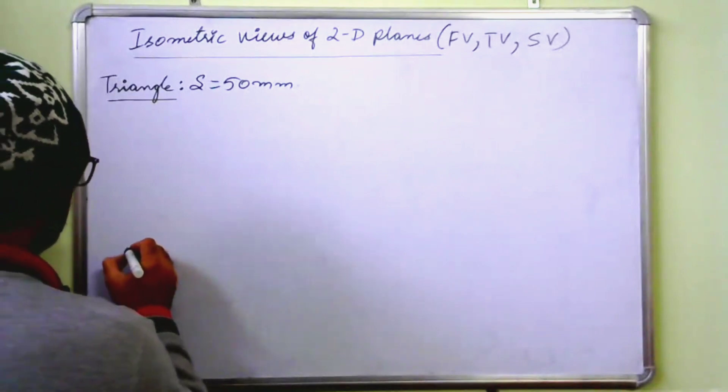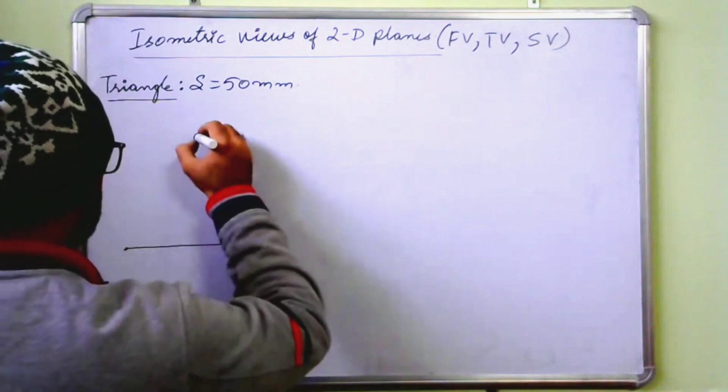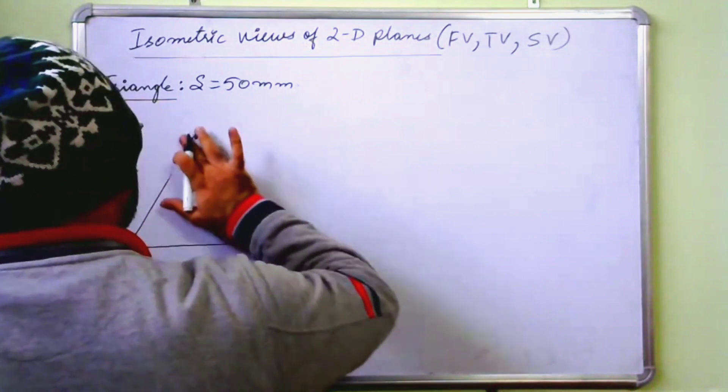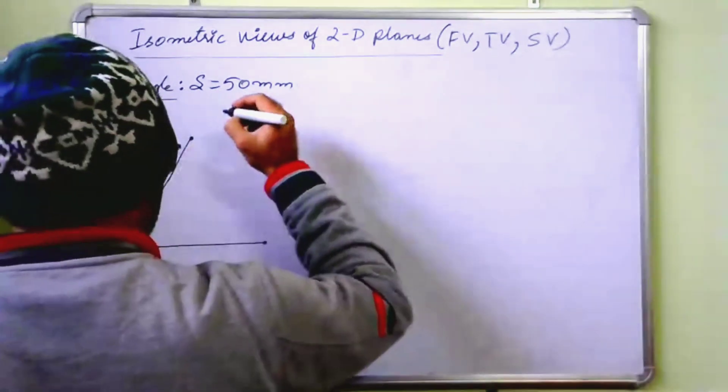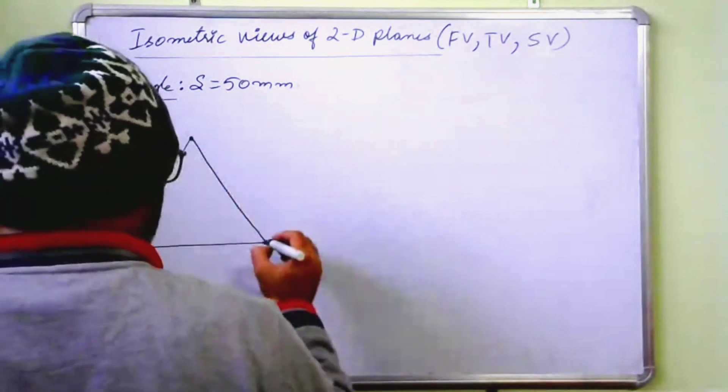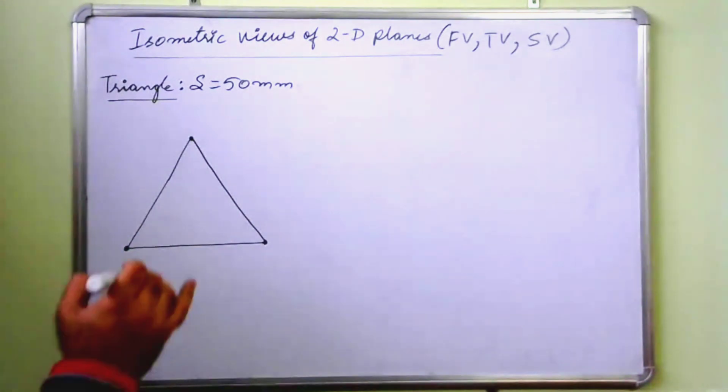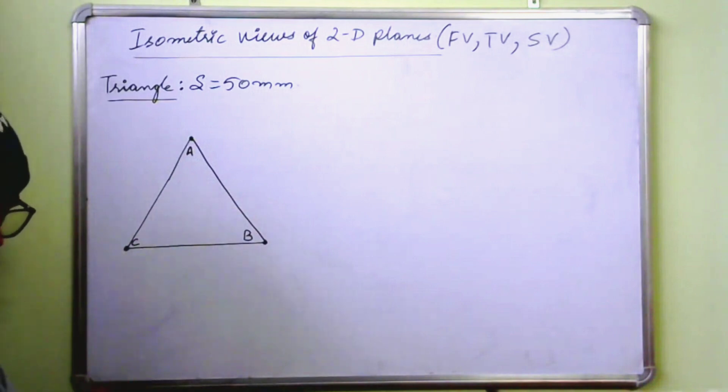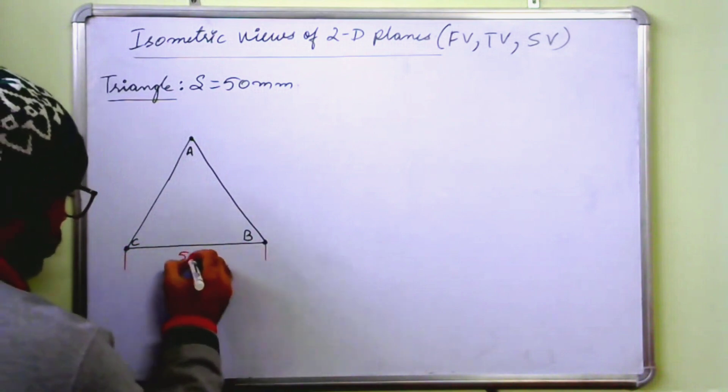Just construct a triangle first, actual view. So we create a triangle. Let us draw the triangle. This is A, this is B and this is C. One side is equal to 50 mm. This is 50.